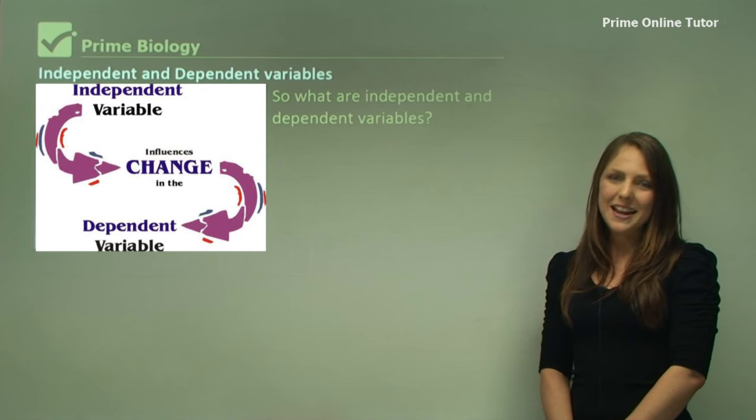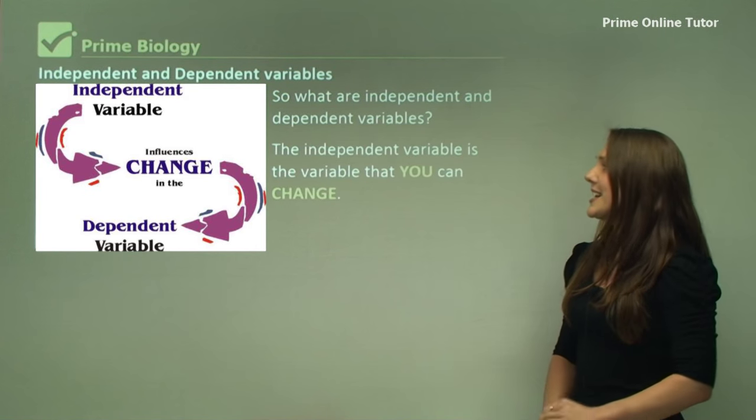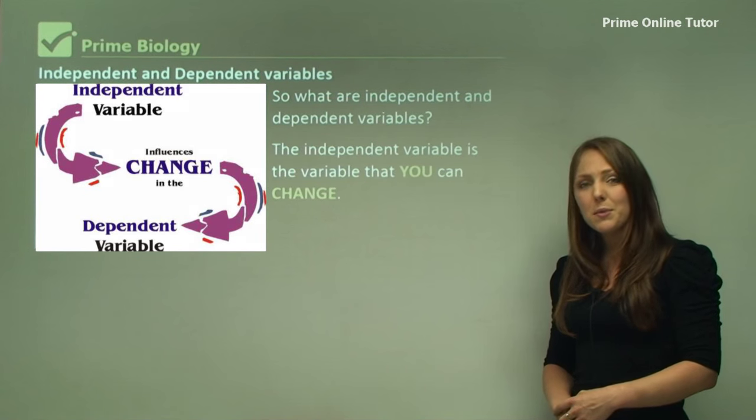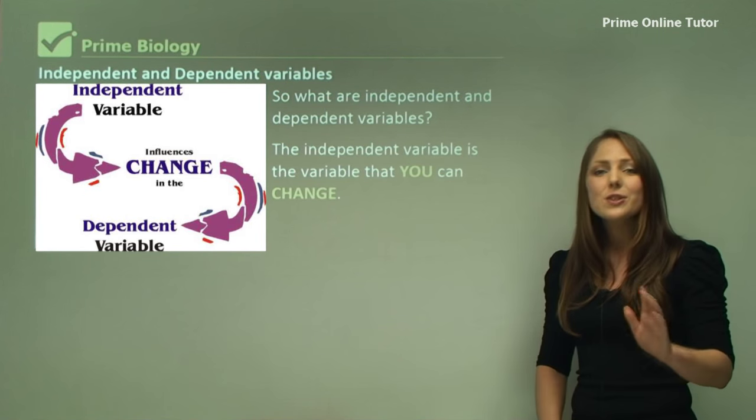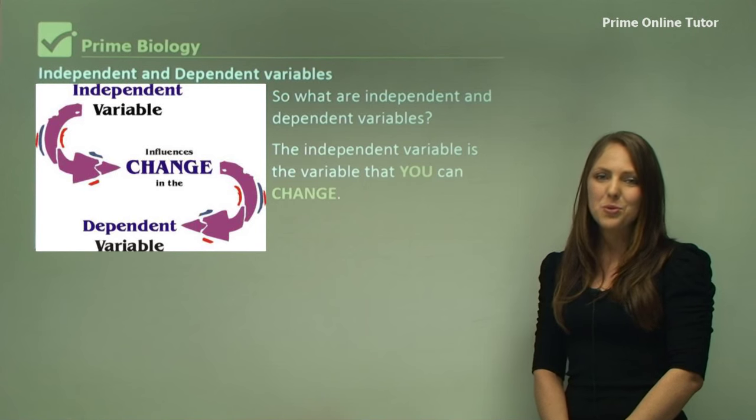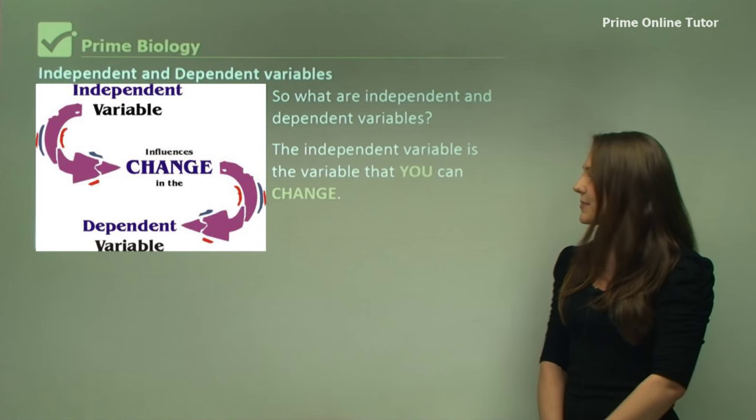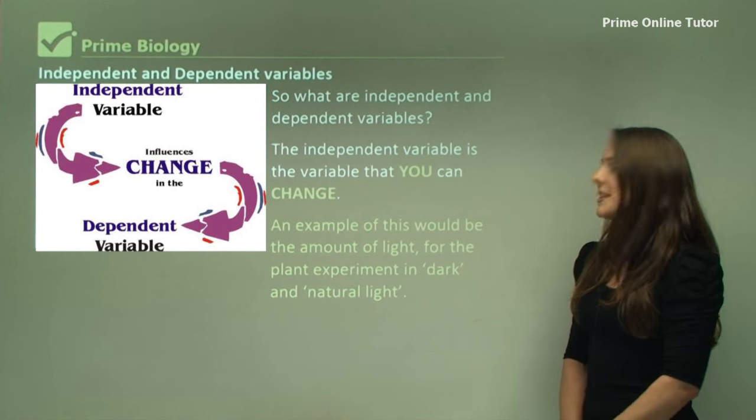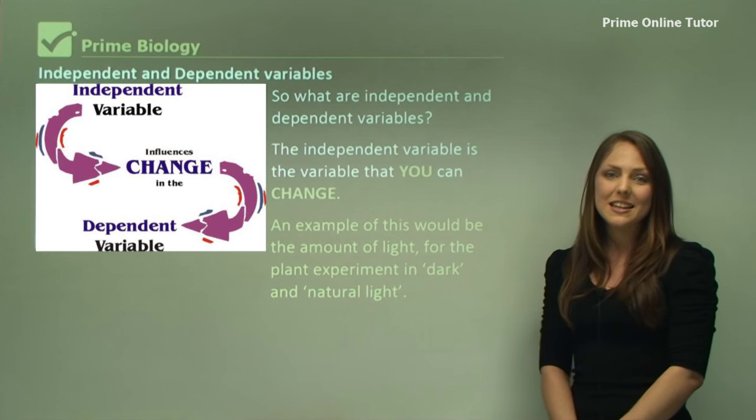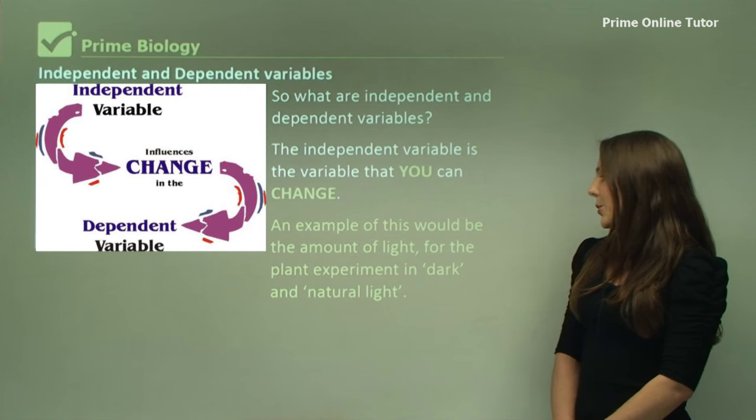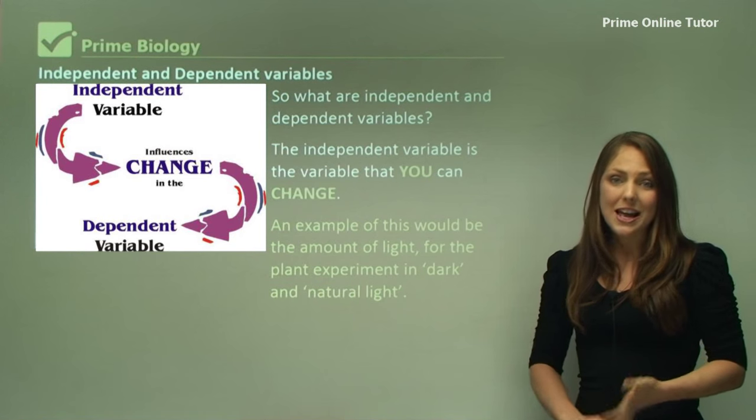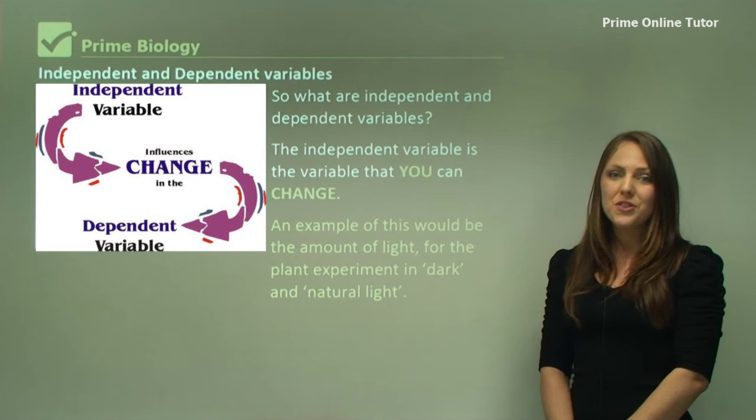So what are independent and dependent variables? The independent variable is the variable that you change. There's only one independent variable in every experiment. An example of this would be the amount of light in this example. So there's dark and natural light and that's the independent variable for this experiment.